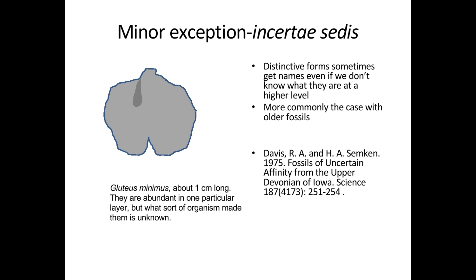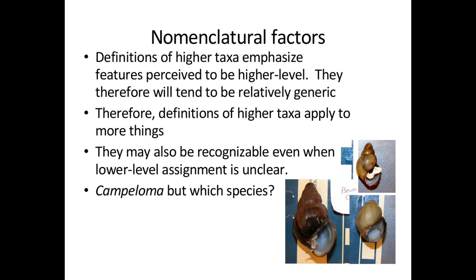There is one particular exception: things classified in uncertain categories. Sometimes you've got a nice distinctive fossil you'd like to talk about, but you don't really know what it is — particularly the case with some early fossils. Not sure if this is the whole thing or just a piece of it. This is just one example, kind of memorable on the name: they thought of something it looked like and called it Gluteus Minimus. But just what sort of animal — or even if it was an animal as opposed to a protist or something else — they couldn't figure out. Also, when you're naming a higher category, you generally pick features that apply at a broad level, so they tend to have relatively generic characteristics, and we may be able to recognize a higher category even if we're not too sure about the lower one.